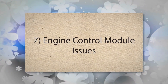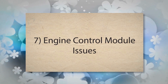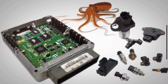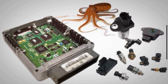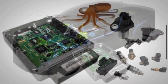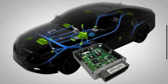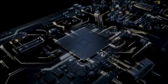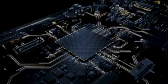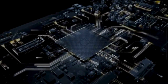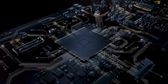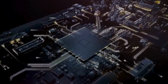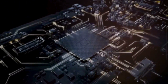7. Engine control module issues — the engine control module is responsible for monitoring and managing various engine parameters, including temperature. If the ECM itself is malfunctioning, it may misinterpret the temperature data and trigger the P0128 engine code.